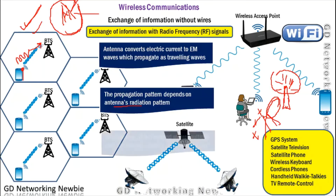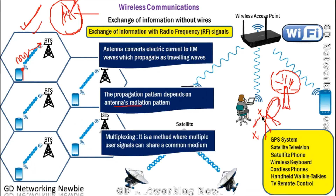Like wired communication — for example, Ethernet, which is a shared medium where multiple users share the same cable — wireless is also a shared medium, meaning multiple users can use the wireless medium simultaneously. The method that enables this is multiplexing. Multiplexing can be used in both wired and wireless communication, and it is defined as a method where multiple users can share a single or common medium at the same time.